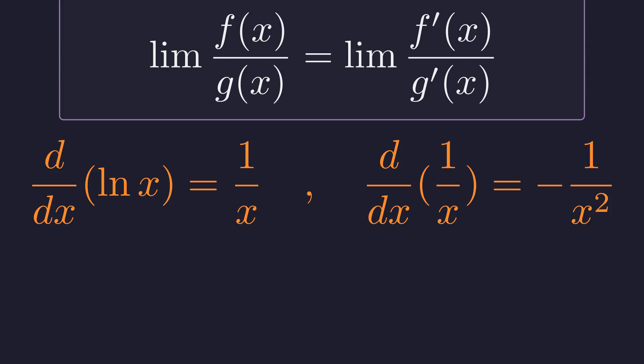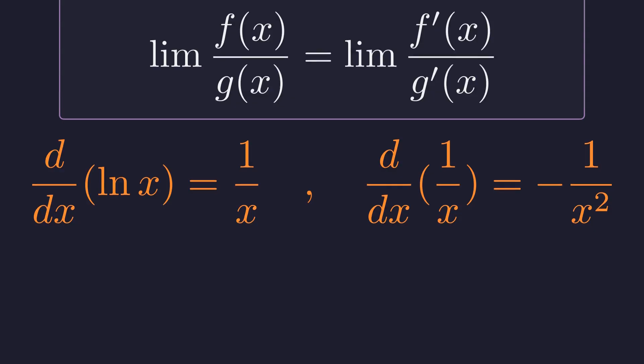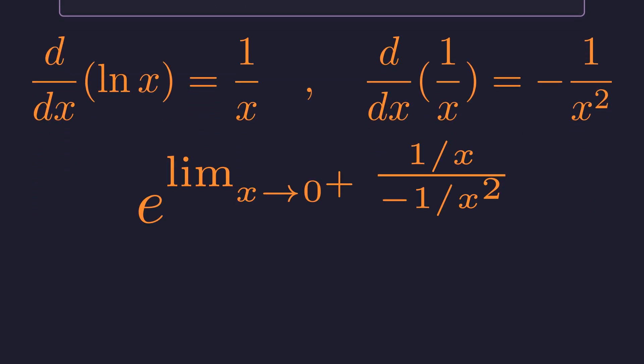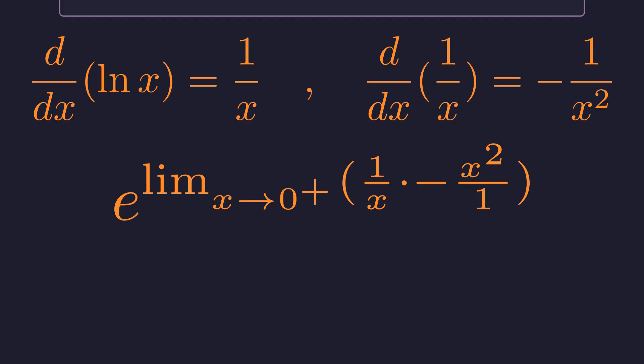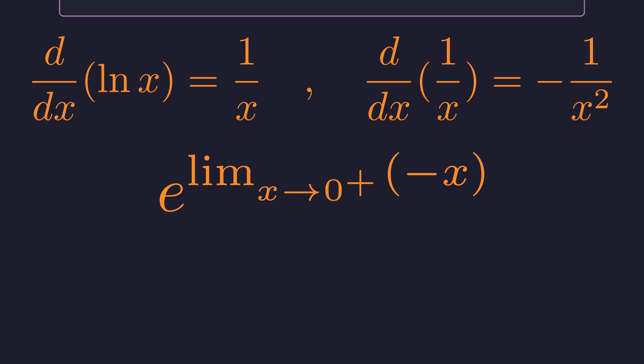First, let's find the required derivatives. The derivative of the natural log of x is 1 over x, and the derivative of 1 over x is negative 1 over x squared. Now we substitute these derivatives back into our limit. To simplify this fraction, we multiply by the reciprocal of the denominator. This simplifies to the limit of negative x as x approaches zero. This limit is zero, giving us e to the power of zero. Finally, e to the power of zero is one. So along the path y equals x, the limit is one.